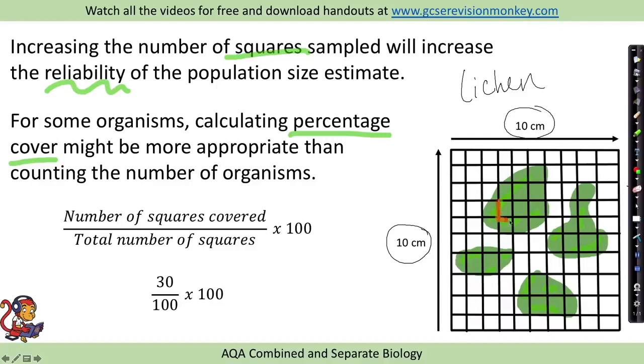In the previous example with daisies, we would look at one random square, which we'd selected by our random number generator, and we calculate the number of organisms inside. However, with lichen, we can't do this because you can't see individual organisms. So instead, you might need to count the number of squares covered by the lichen.